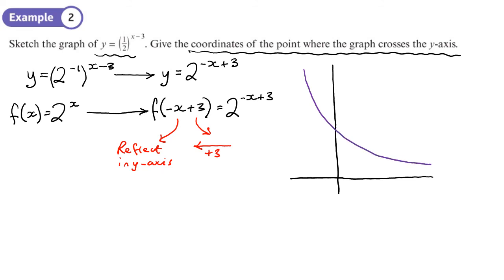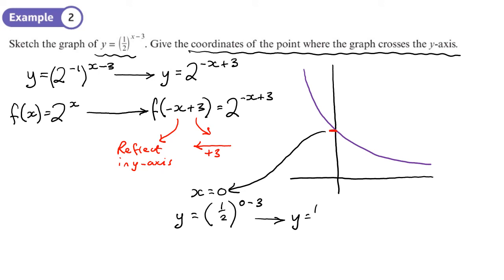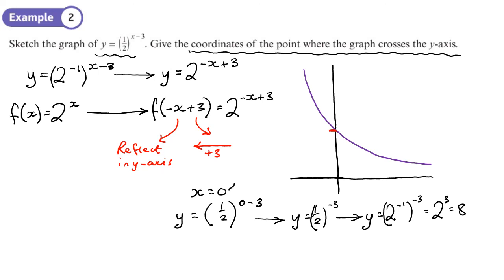The sketch shows the shape — it's only approximate but the shape is what's important. To find where it crosses the y-axis, we set x equal to 0, giving y equals one-half to the power of 0 minus 3, which is one-half to the power negative 3. That equals 2 to the negative 1 to the power negative 3, which is 2 cubed, which is 8. So it crosses the y-axis at the point (0, 8).